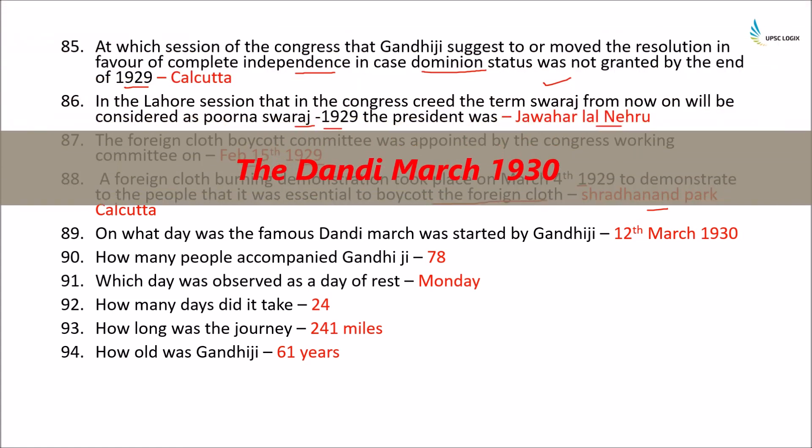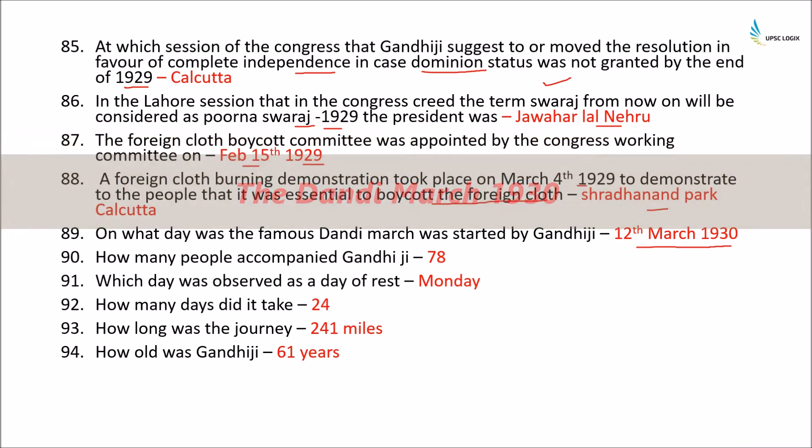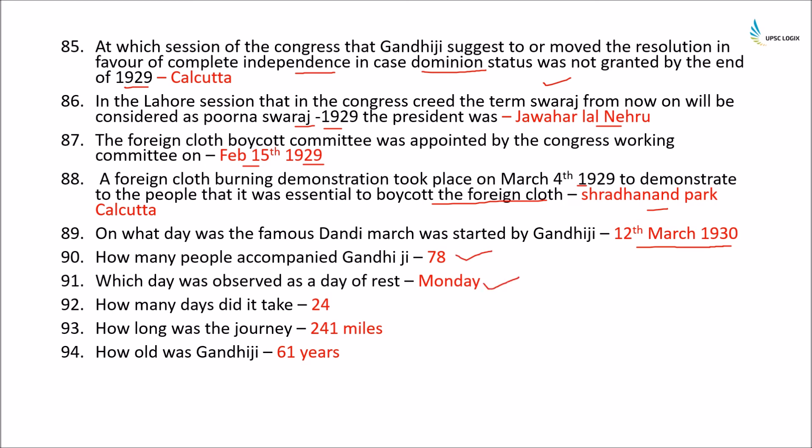Gandhiji embarked on the famous Dandi March on 12th March 1930, accompanied by 78 people. Monday was kept as a day of rest. It took 24 days to complete the 241-mile journey, and Gandhiji was 61 years of age at the time. Most people would be retiring at 60, yet Gandhiji embarked on this 241-mile journey for the nation — a testament to how much sacrifice our leaders made to achieve independence.